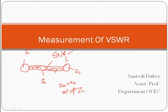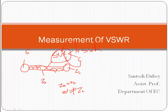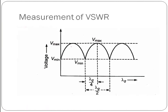SWR is of two types. One is known as voltage standing wave ratio and the second is current standing wave ratio. If this pattern is represented in voltage form, it is known as VSWR, and if represented in current form, it is known as CSWR. Here we are going to discuss VSWR — voltage standing wave ratio.